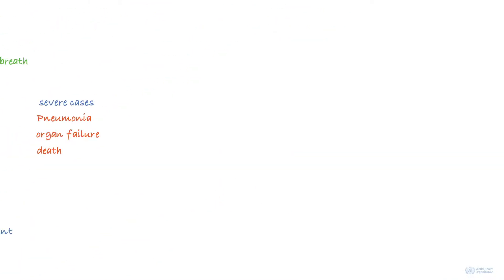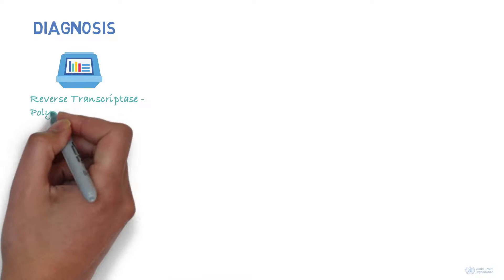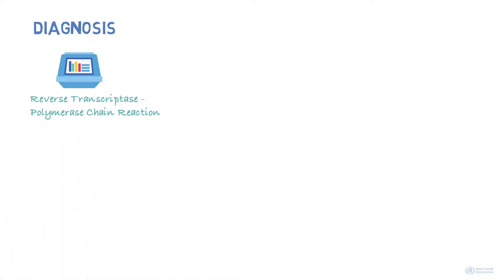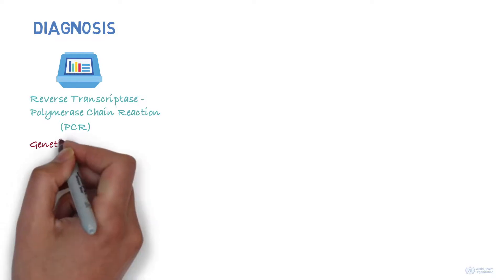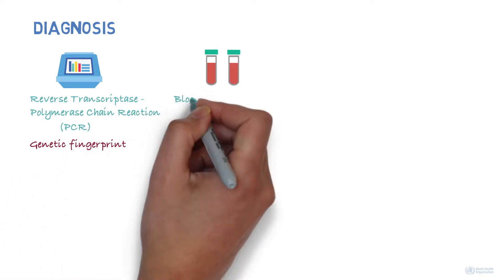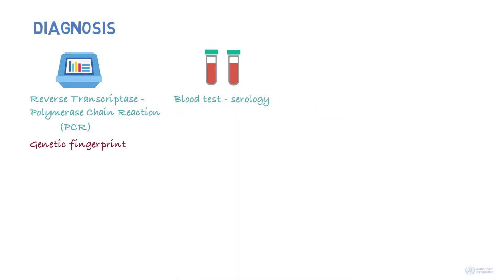How can we tell whether someone is infected? The infection is commonly diagnosed by a test called reverse transcriptase polymerase chain reaction, generally known as PCR. This test identifies the virus based on its genetic fingerprint. There is also a blood test that can check for antibodies against the virus, which may show that someone was infected in the past.